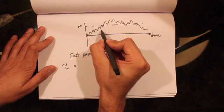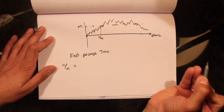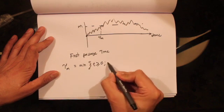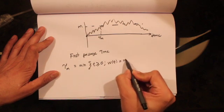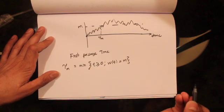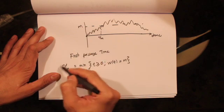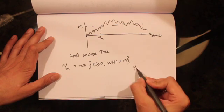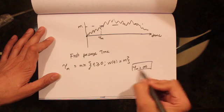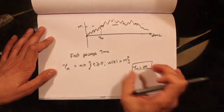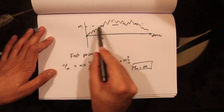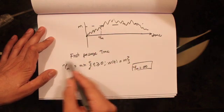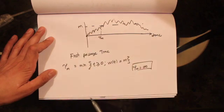Tau M is basically the minimum of time greater than or equal to zero such that the Brownian motion achieves level M. Looking at a particular path, the earliest time the Brownian motion reaches level M is tau M. If the Brownian motion never achieves that level, then tau of M is equal to infinity.